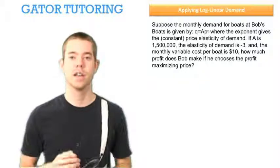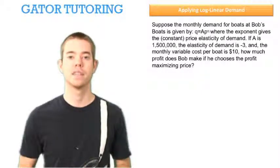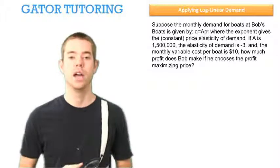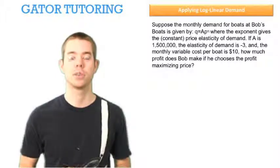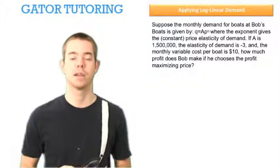If the constant A is equal to 1.5 million, the elasticity of demand is negative 3, and the monthly variable cost is $10 per boat, how much profit does Bob make if he chooses the profit maximizing price?